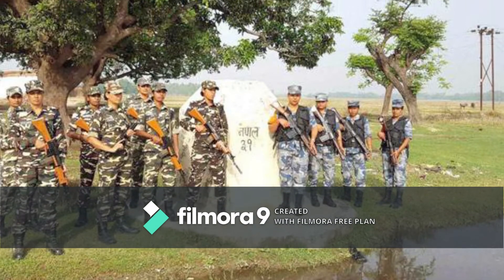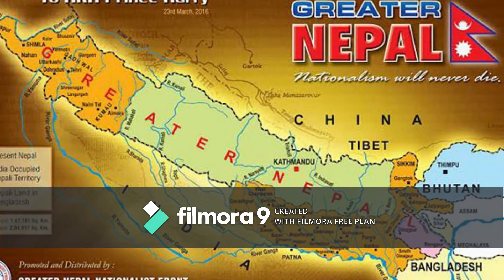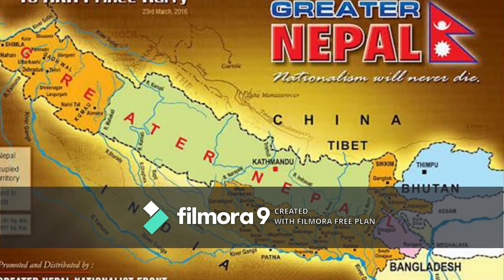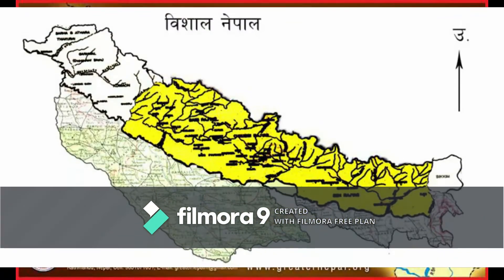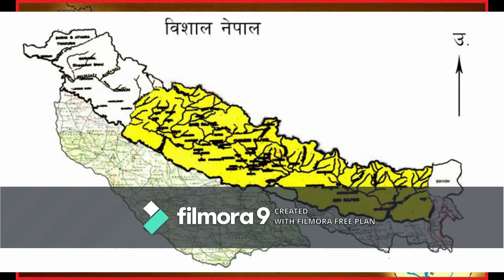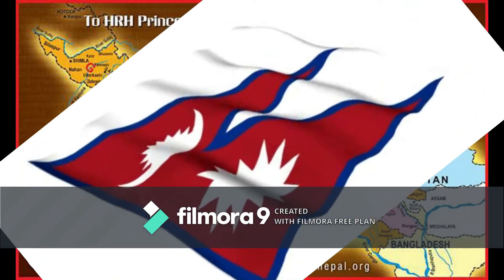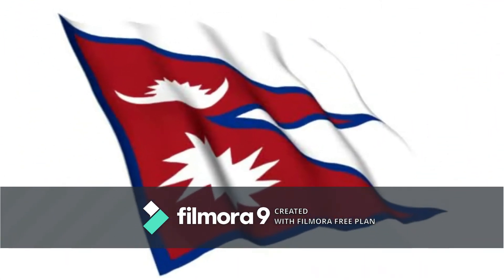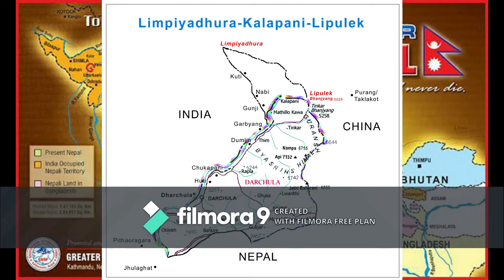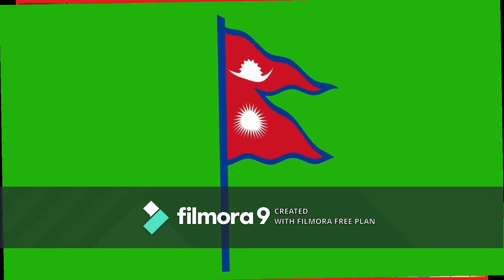India and Nepal differ as to which stream constitutes the source of the river. Nepal has reportedly tabled an 1856 map from the British India Office to support its position. Kalapani has been controlled by India's Indo-Tibetan Border Police since the Sino-Indian War with China in 1962.